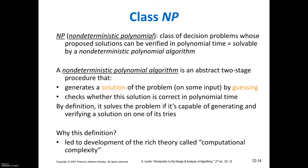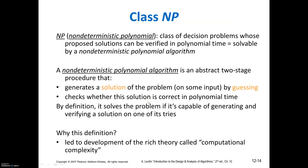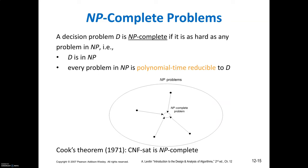Next, Class NP — non-deterministic polynomial — is the class of decision problems whose proposed solutions can be verified in polynomial time and which are solvable by a non-deterministic polynomial algorithm. NP problems have two stages: in the first stage it generates a solution by guessing, and in the second stage it checks whether this solution is correct in polynomial time.